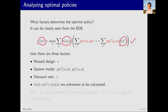Known quantities are in red. They include the probability that represents the system model, reward r, and the discount rate gamma. Solving the Bellman optimality equation means determining the unknown quantities, which are in black, based on these known values in red. Clearly, the optimal policy and optimal state value are determined by these known quantities, which include the reward design, the choice of discount rate gamma, and the system model.